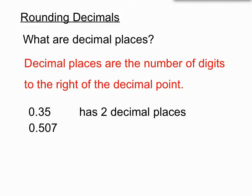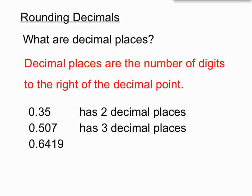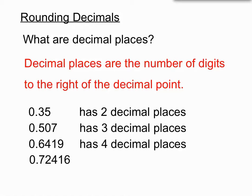0.507 has three digits after the decimal point, so we would say 0.507 has three decimal places. 0.6419 has four decimal places, and 0.72416 has five decimal places. It's the number of digits that come after the decimal point.